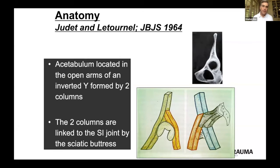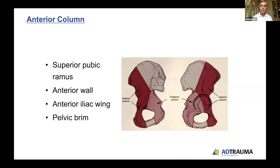Letournel described the acetabulum as located in the open arms of an inverted Y. It is attached to the sacrum through this sciatic buttress — a large portion that runs in the supraacetabular area back to the SI joint. That led really to the whole concept of the anterior and posterior column, which I think we're all very familiar with.